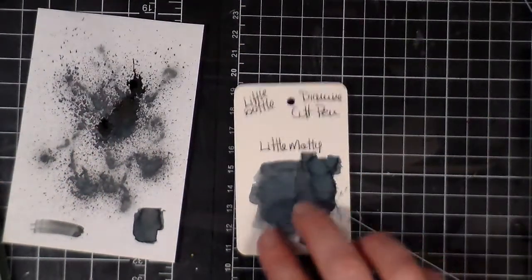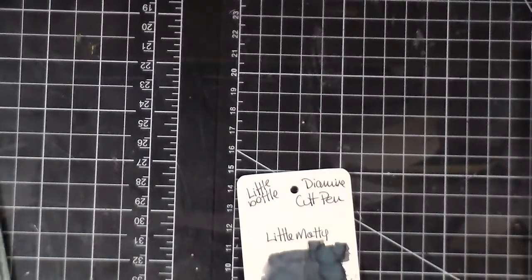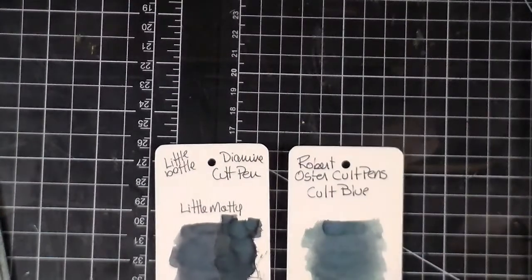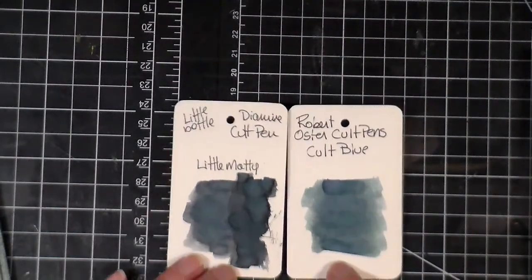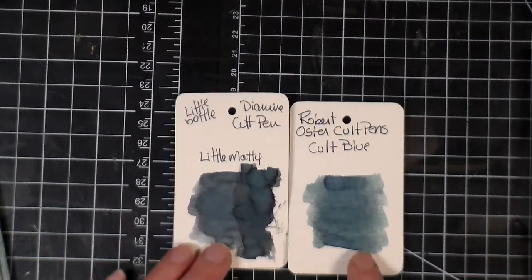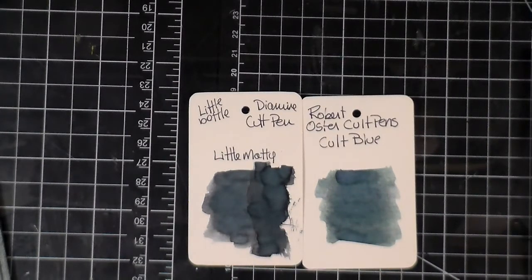So I pulled out the Robert Oster Cult Blue and I thought it was very similar. I know that this one is darker but you can still see that it's very similar.